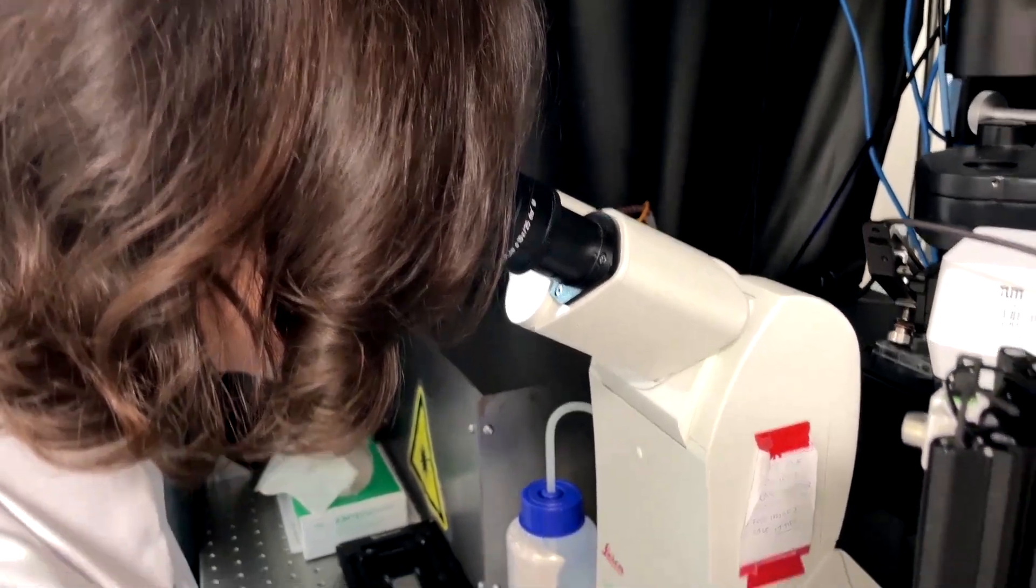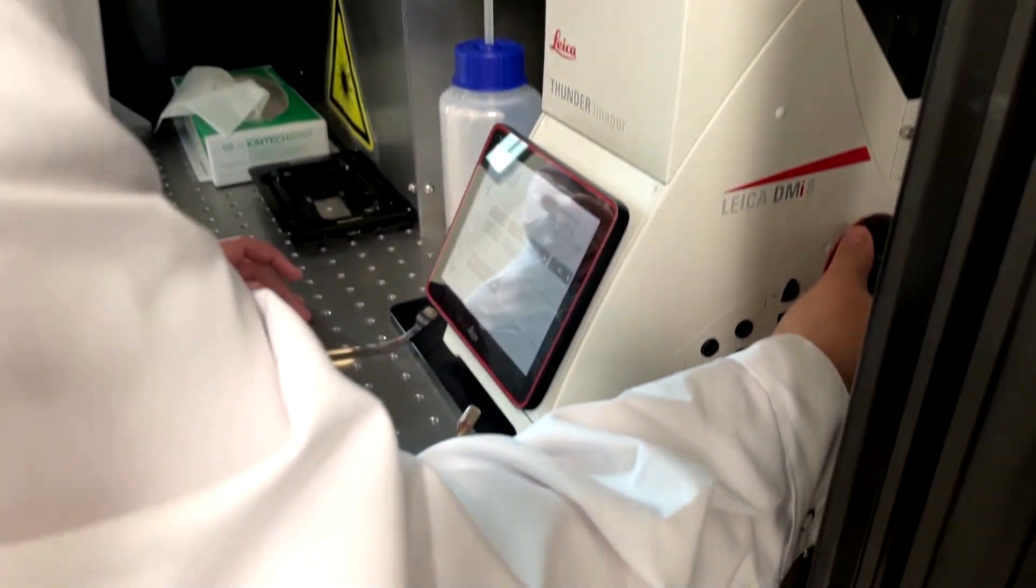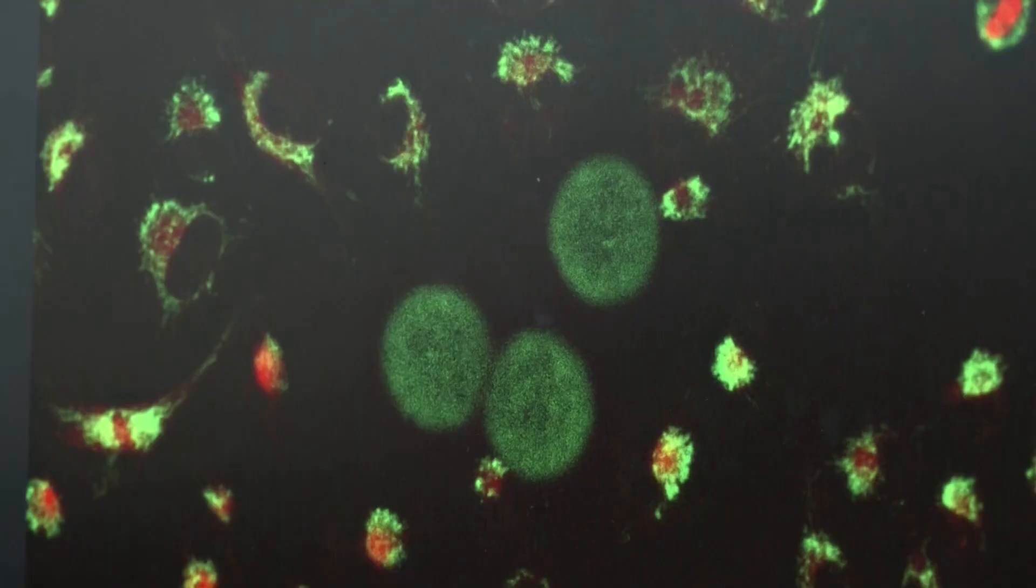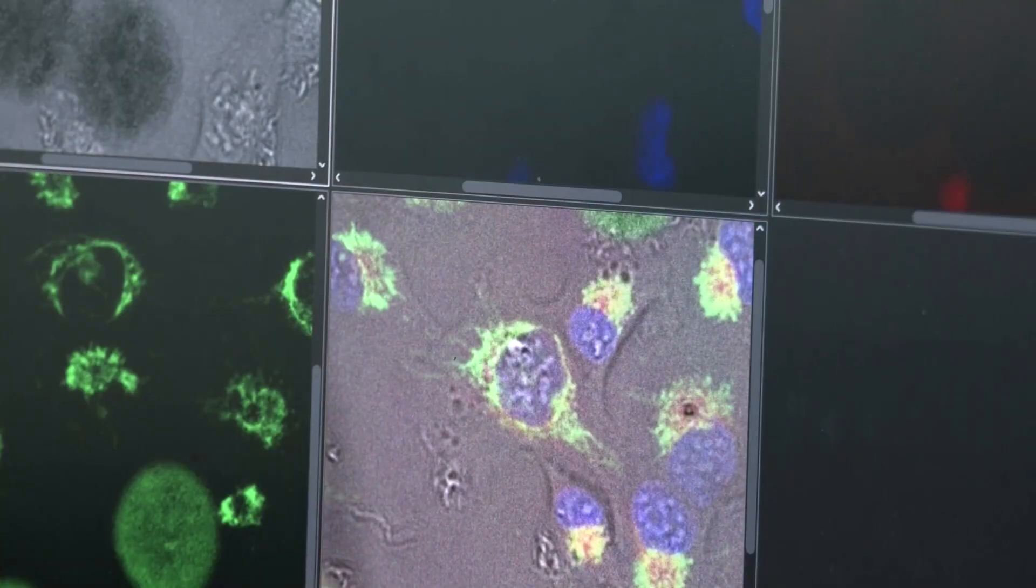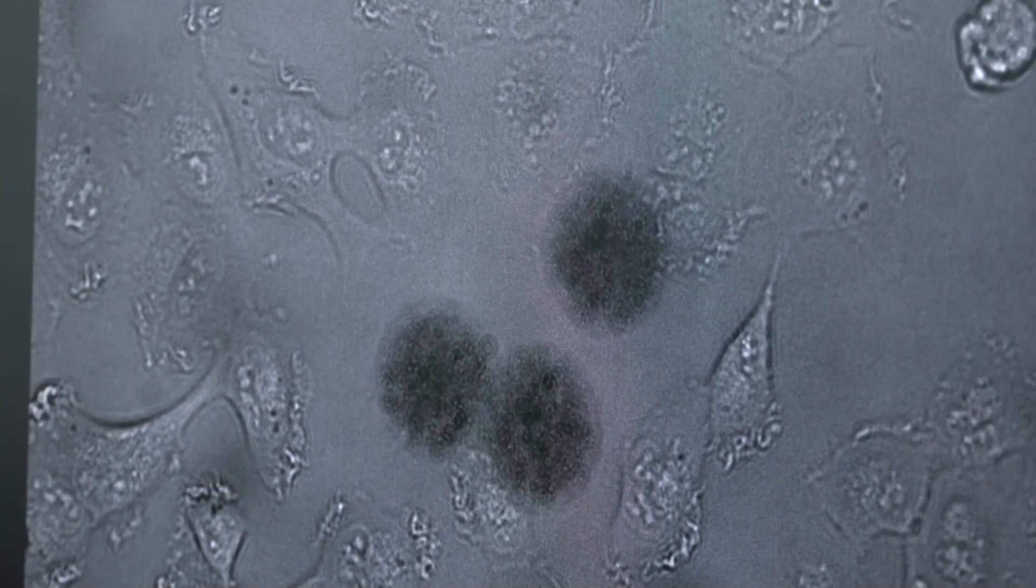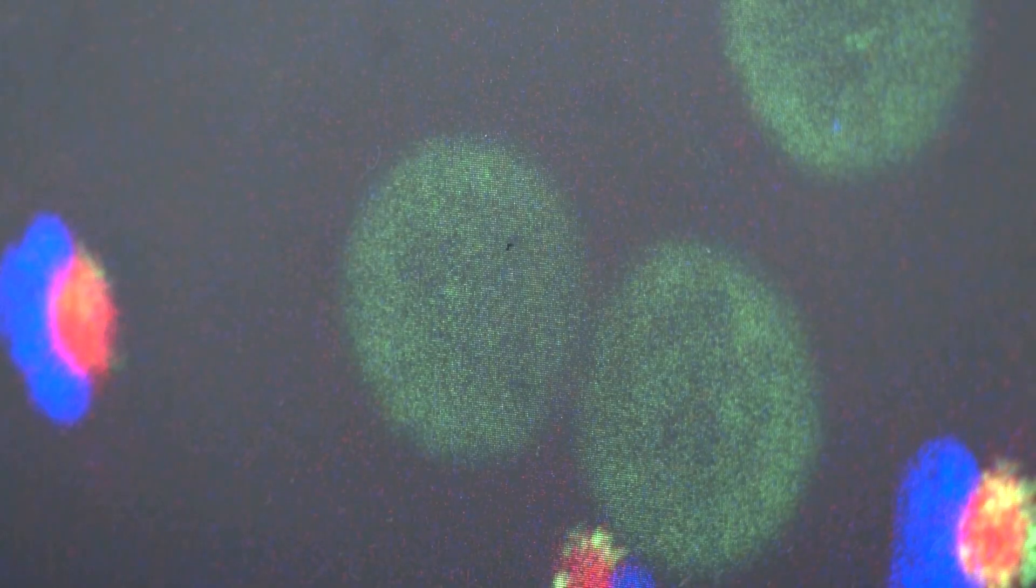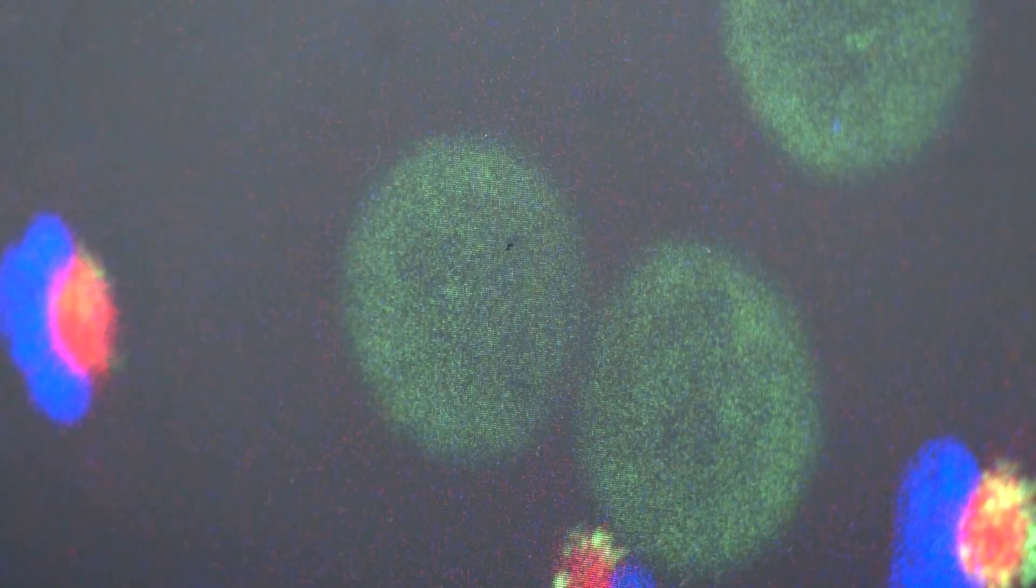The tiny robots are made from seaweed and the team has found a way to produce millions of them in just minutes. They are about half the width of a human hair or about the same size as human cells. They are soft like human cells too and can be controlled wirelessly.